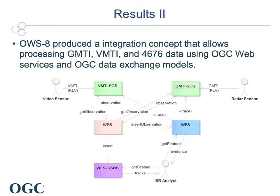Though the focus of this thread was on information model mapping between different standardization communities and across different encoding paradigms, the thread produced a conceptual integration of the new models into OGC web service frameworks. It has been proven that GMTI, VMTI, and 4676 data can be exchanged using OGC web services such as Sensor Observation Service, Web Processing Service, or Web Feature Service.